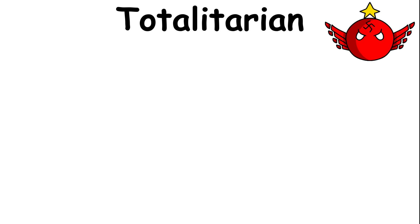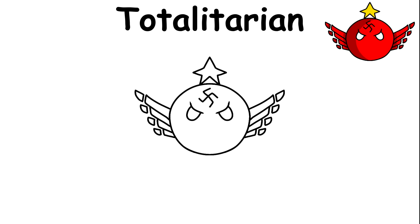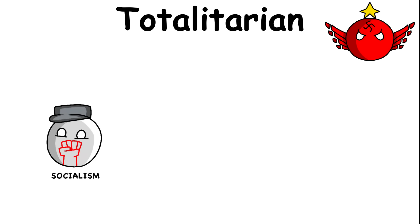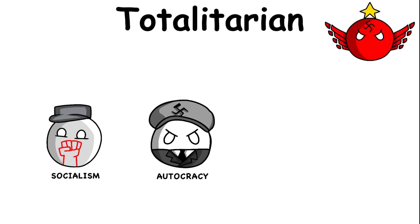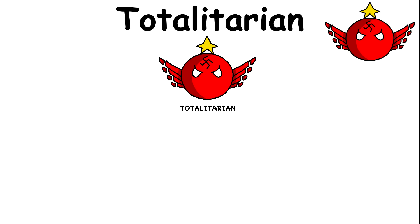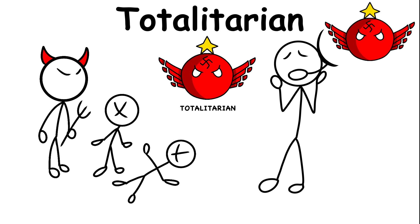One of the best examples of a totalitarian regime in modern times is North Korea, which follows a totalitarian republic ruled by the Kim family for three generations already. Like socialist, autocratic, and communist governments, a totalitarian regime is prone to human rights suppression and abuses.